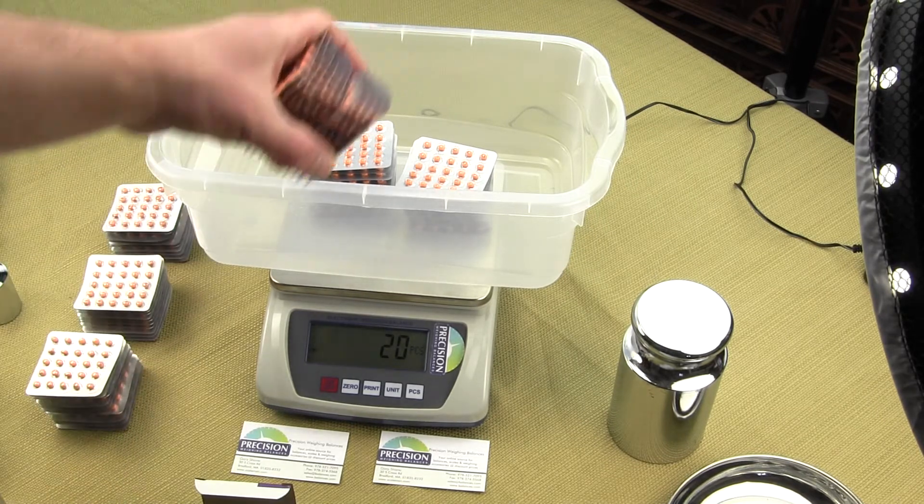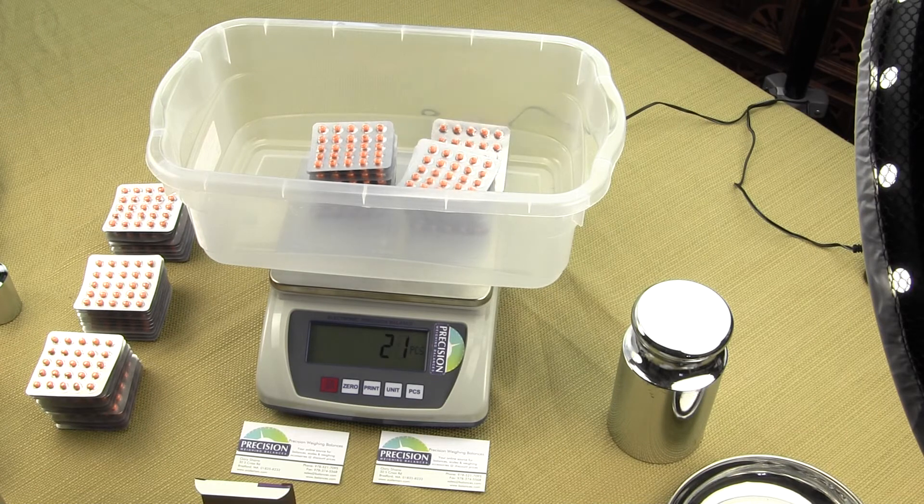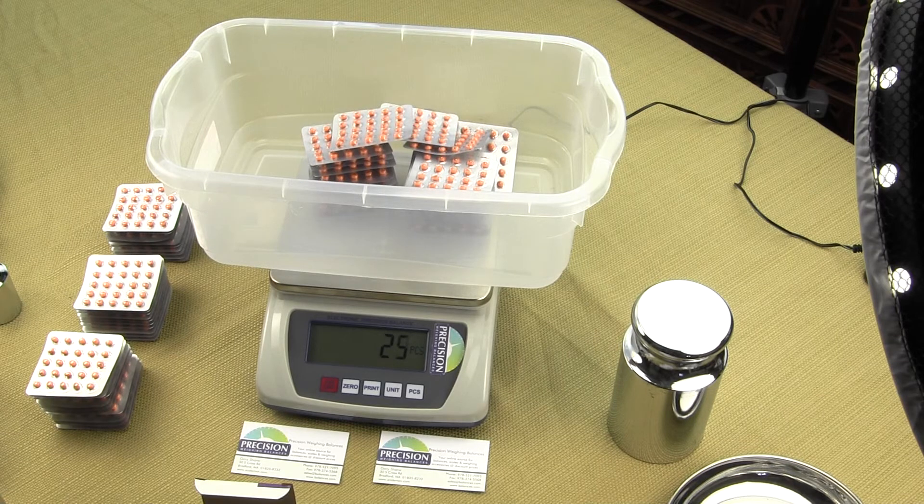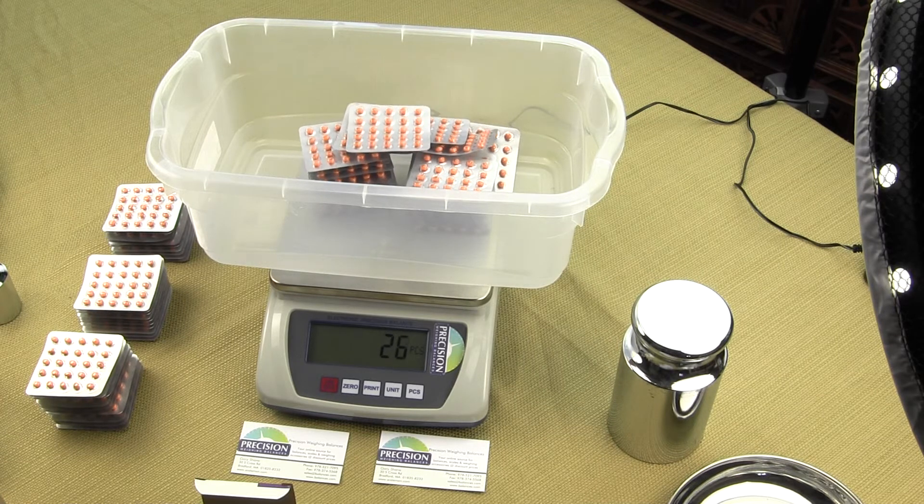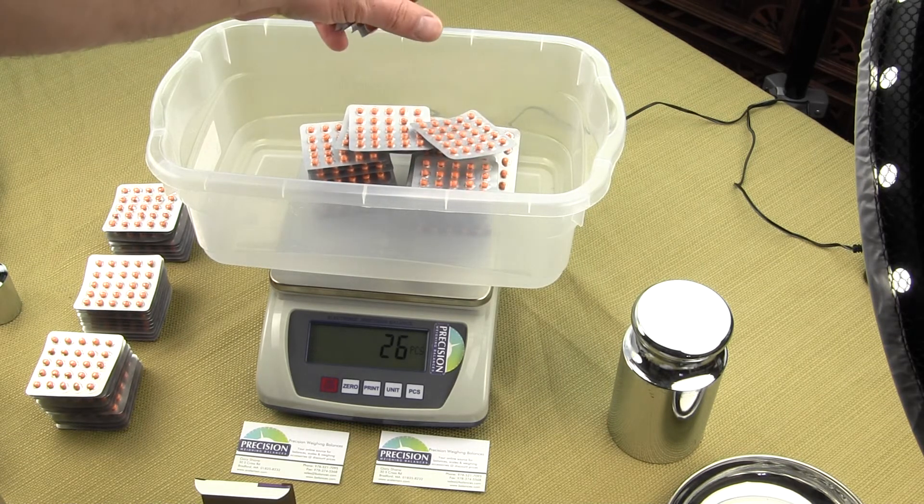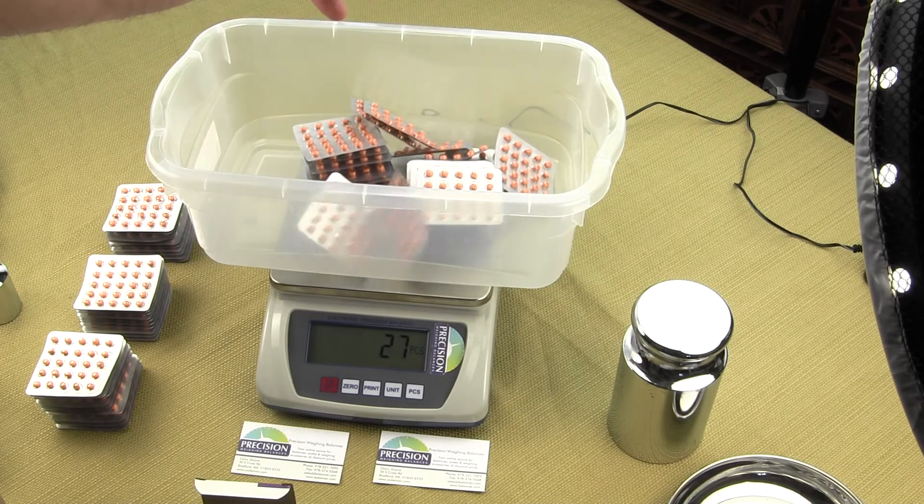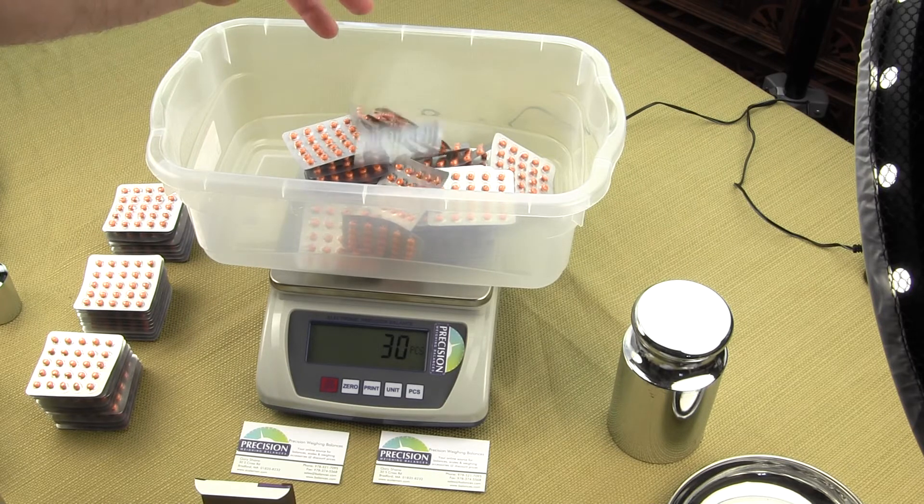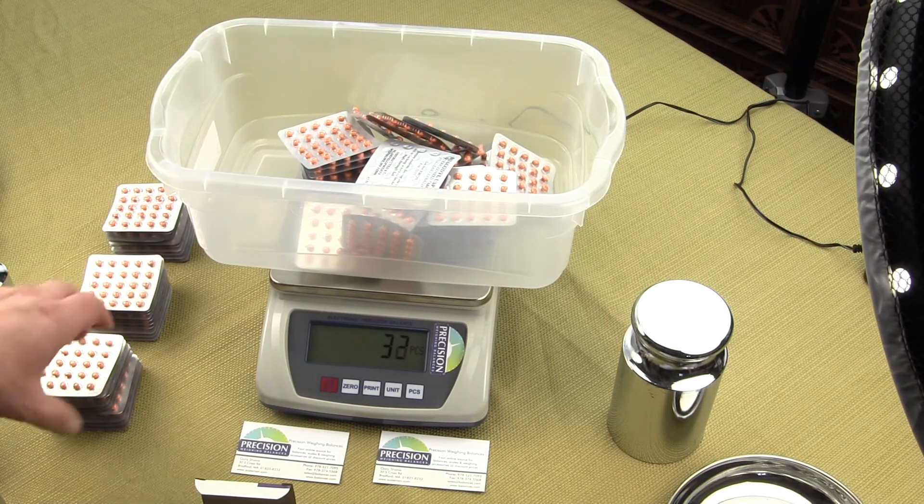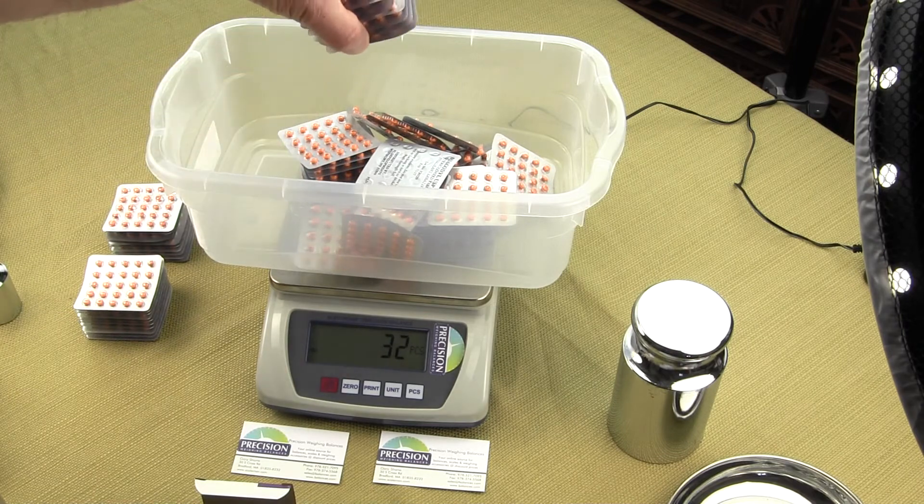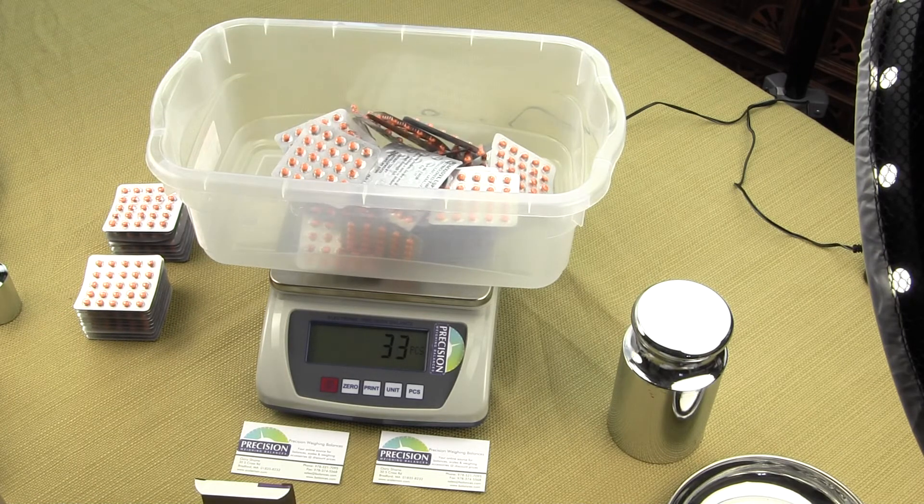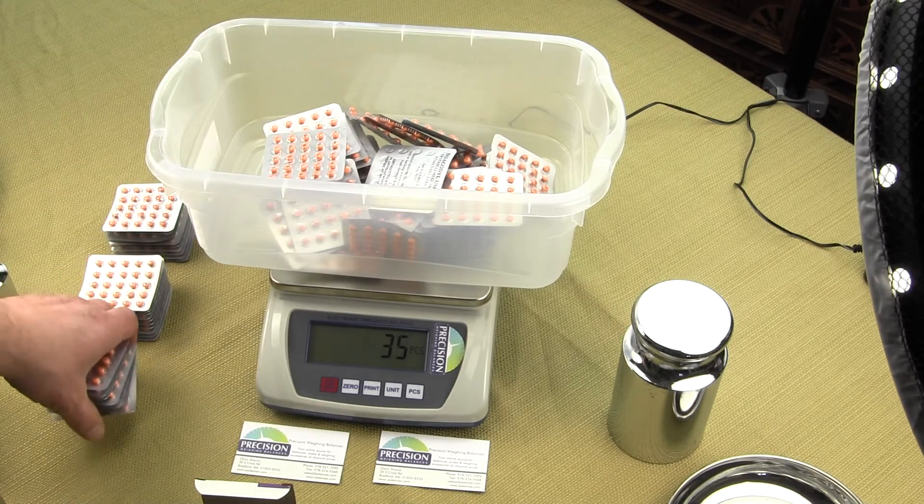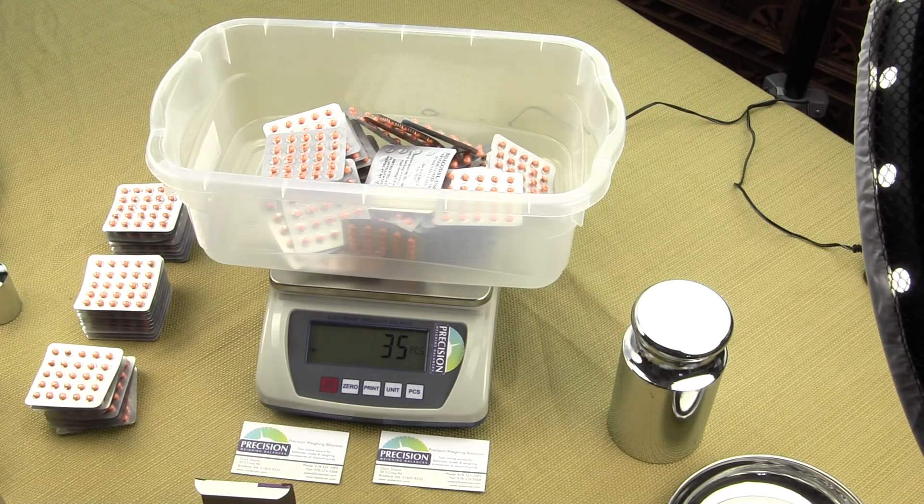We can drop in one at a time. There's 1, 2, 3, 4, 5, 6, 7, 8, 9, 10, 11, 12, and another one, 2, 3. You can see how accurate and how fast this counting scale is altogether.